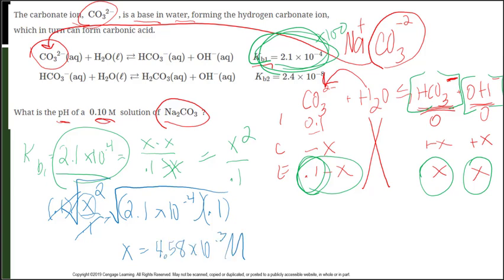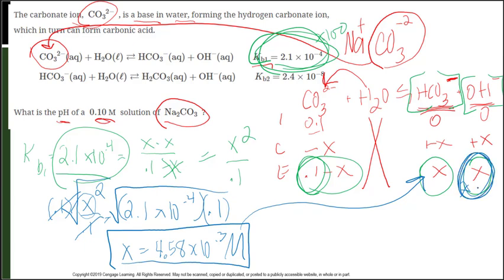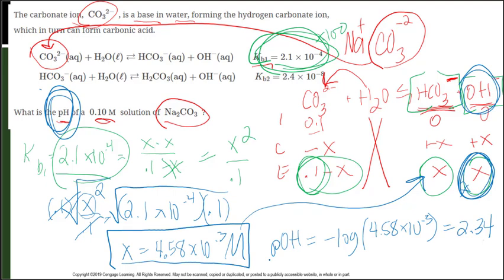X squared over 0.1 is equal to the 2.1 times 10 to the negative 4. Now I'm going to get rid of this 0.1, so I'm going to multiply both sides by 0.1 to cancel that out. And then to get X by itself, I'm going to take the square root of both sides to get X is equal to 4.58 times 10 to the negative 3 molar. Now that tells me my HCO3- concentration and my hydroxide ion concentration. And because that tells me my hydroxide ion concentration, I can find the pOH and take the negative log of 4.58 times 10 to the negative 3, which gives me a value of 2.34. But we want to know the pH, so I simply just have to do 14 minus 2.34, and that would give me a pH value of 11.66.